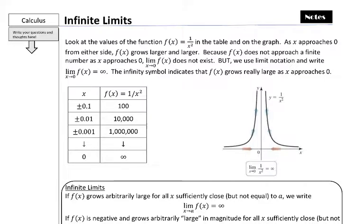Basically what infinite limits are is that if you look at values of a function — and the one we're going to look at today is f of x equals 1 over x squared — if you look at the values of the function, whether you're looking at a table or a graph, we can see that as x approaches a value, in this case as x approaches 0 from either side, the y values grow bigger and bigger.